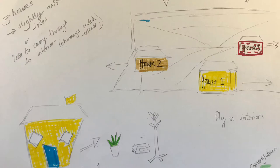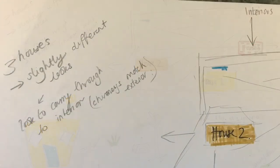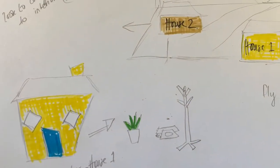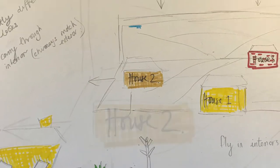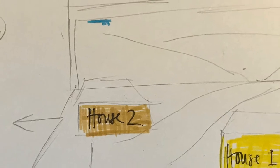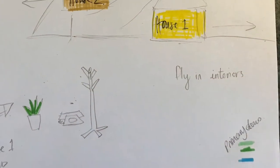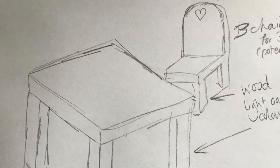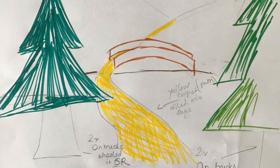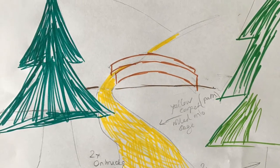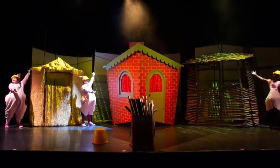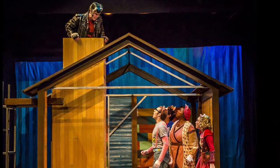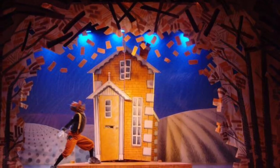Start by drawing sketches for your ideas for the set. If you're planning to create different sets for different scenes in the play, make sure you do a separate sketch for each scene. Make notes around your sketches about key points you'll need to consider when you create the model of your set. You can also make notes about any materials and fabrics you would use if you were to create the set for real in a theatre. Don't forget to colour in key elements of your sketch and make it as detailed as possible.